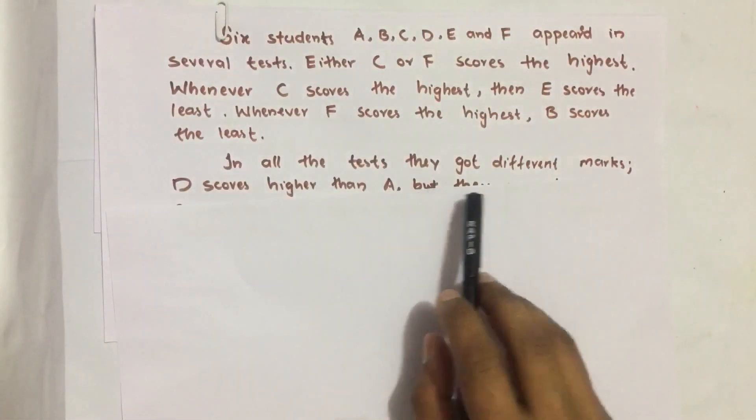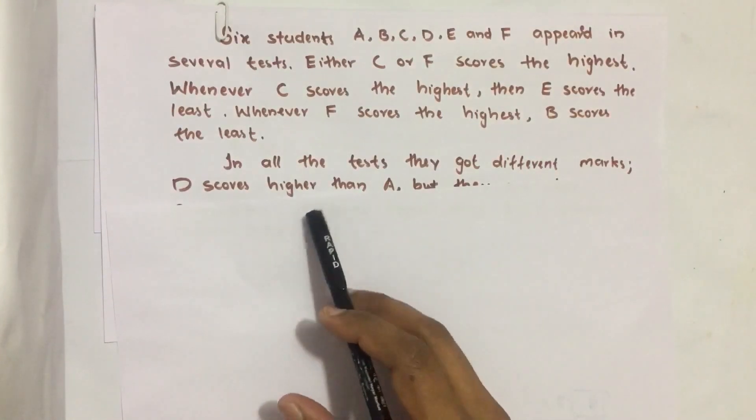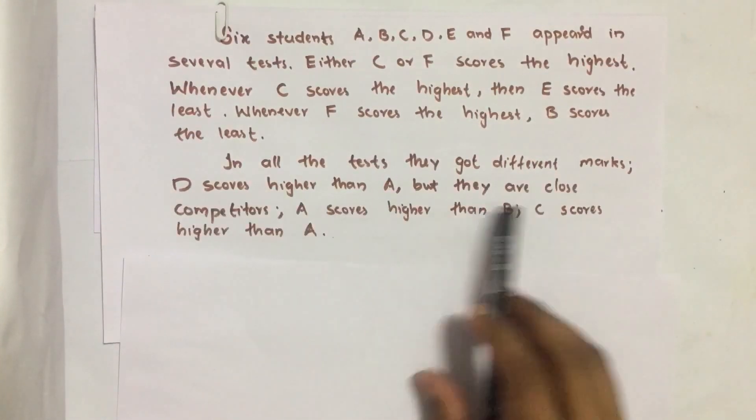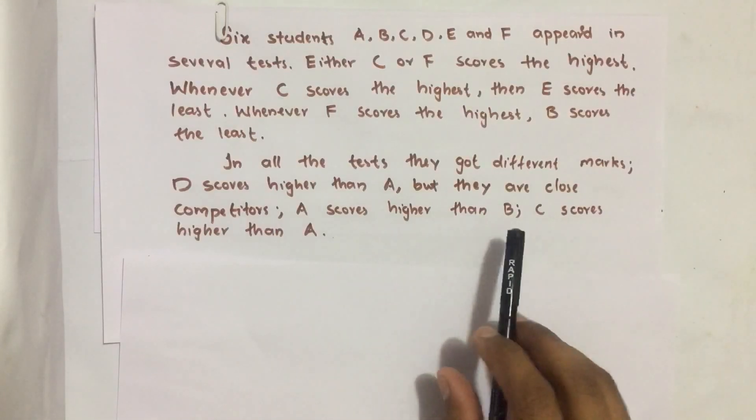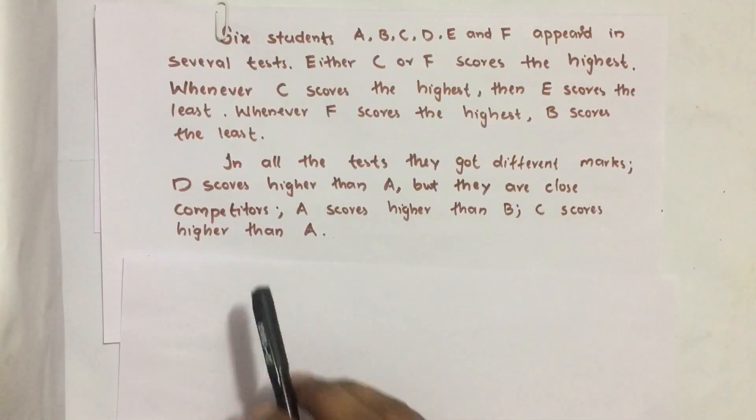In all the tests they got different marks. D scores higher than A but they are close competitors. A scores higher than B and C scores higher than A.